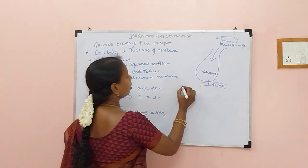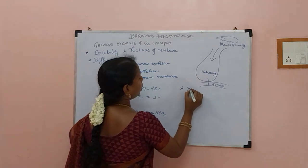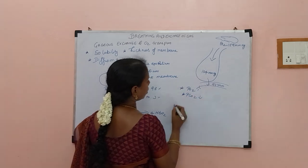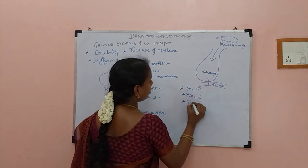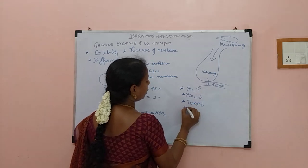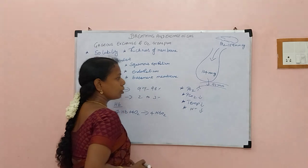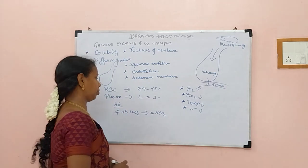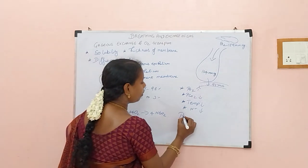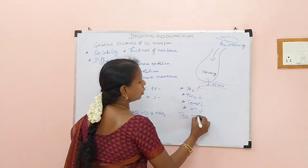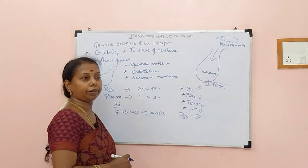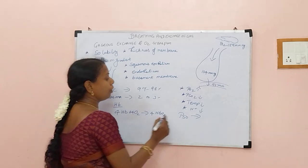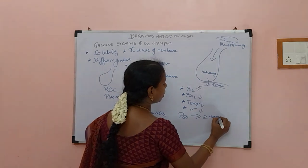When oxygen combines with hemoglobin, the conditions required are: PO2 should be more, PCO2 should be less, temperature should be less, and hydrogen ion concentration should be less. At the P50 value, hemoglobin and oxygen attraction becomes 50% saturated. The P50 pressure value is 27 mmHg — that is also a possible exam question.